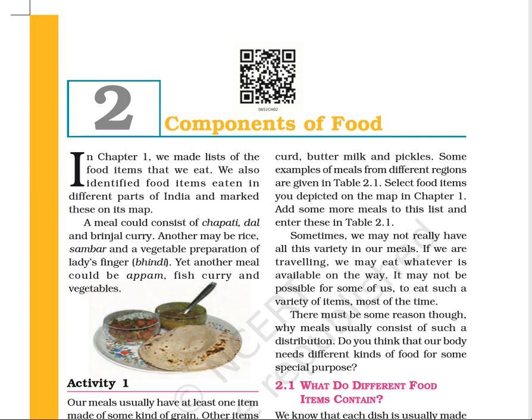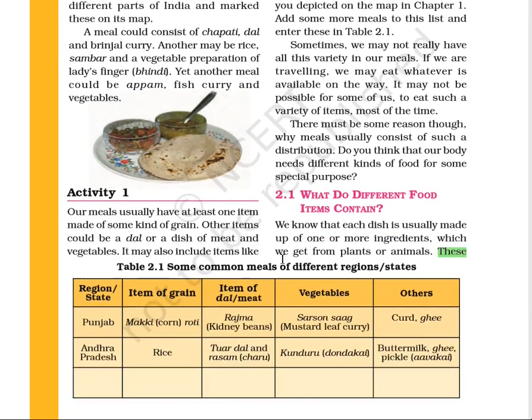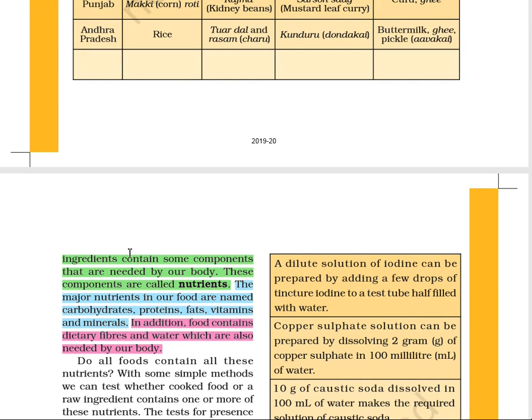For example, if I say you are going to have dal, rice and salad in your lunch — are they all the same, or do they contain the same nutrients? Before starting that, we should know what a nutrient is. The ingredients of our food contain some components, and those components are called nutrients. In simple words, the components of food which are needed by our body are called nutrients.